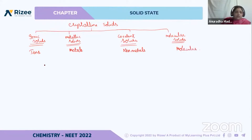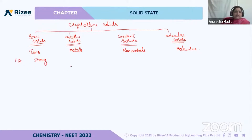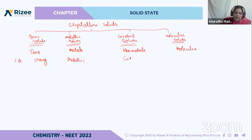What about the force of attraction in each type? In ionic solids, the force of attraction is strong because of positive and negative charges — they are bonded by ionic bonds. Metals are bonded by metallic bonds. Covalent solids are bonded by covalent bonds. And in molecular solids, the force of attraction is van der Waals force.